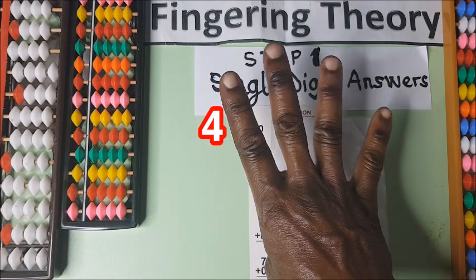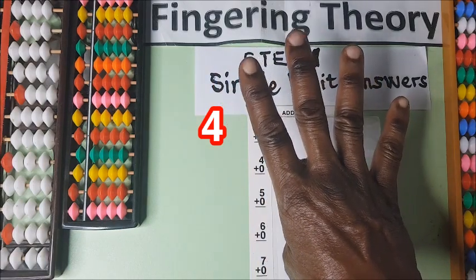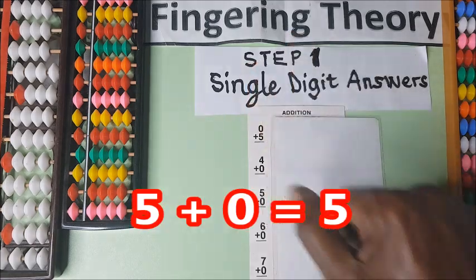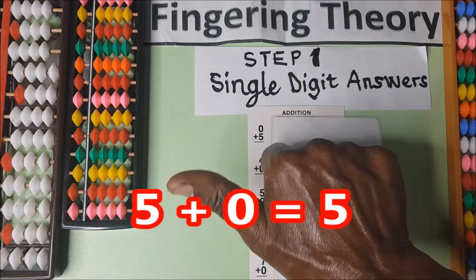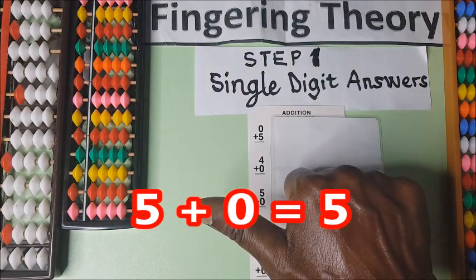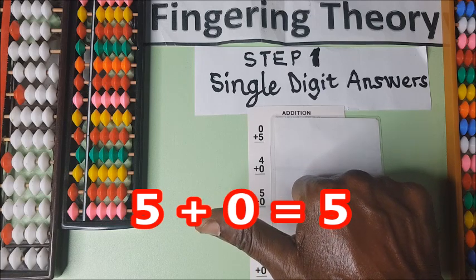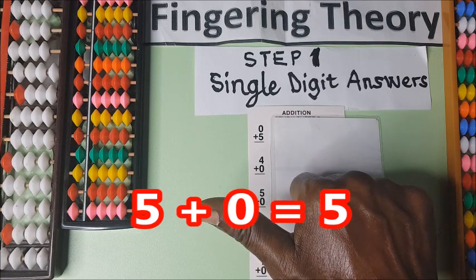Four plus zero is the same four. Now we have five plus zero on your right hand. Five plus zero is the same five because you add nothing. Zero means nothing.